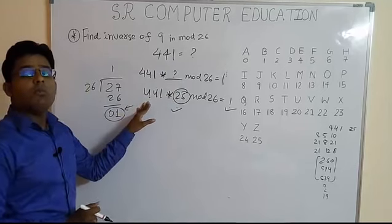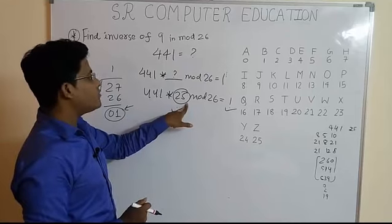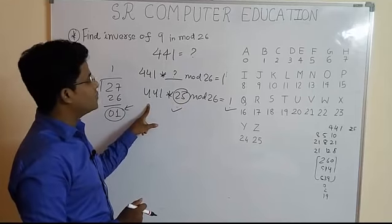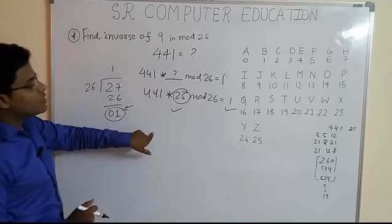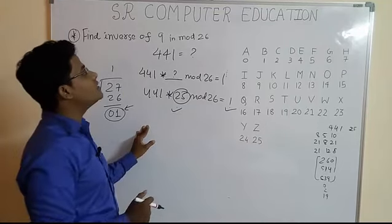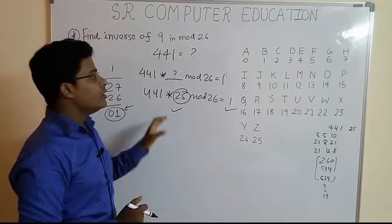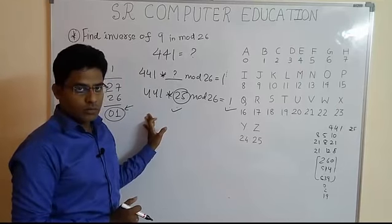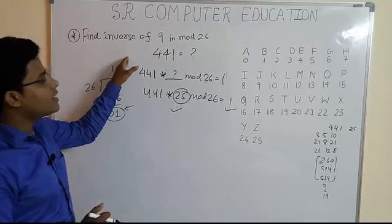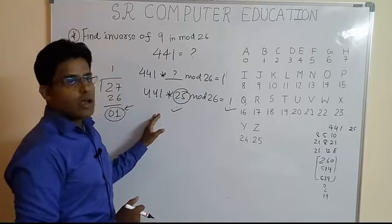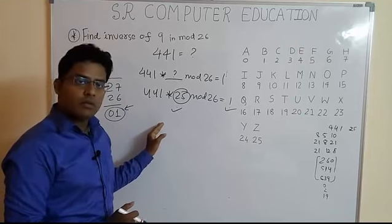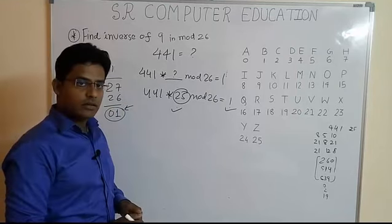This is known as multiplicative inverse. 25 is known as multiplicative inverse of 441. And the procedure which we are following, this procedure is known as extended Euclidean algorithm. You don't have to go in much detail about this algorithm. So, I have told you in a simple way, how to find inverse of any number using this method.